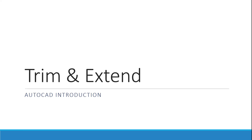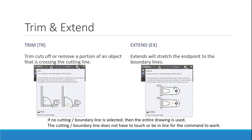Trim and extend is going to be really super useful. The trim command is going to cut objects away between two points, and extend is going to grow an object to a line. Importantly, you do not have to select the cutting or boundary line if you don't want to — you can just press enter to bypass it. Another useful thing about these two commands is that if you're in one, you're also in the other. It's as simple as holding down the shift button to switch between them.